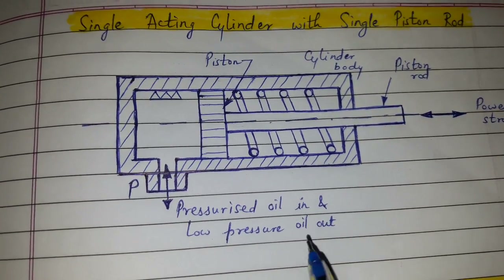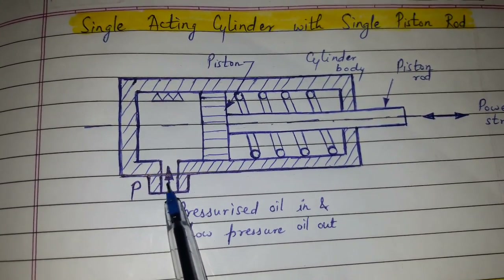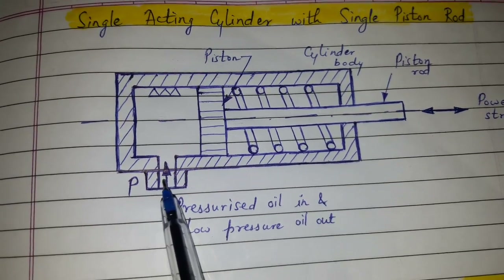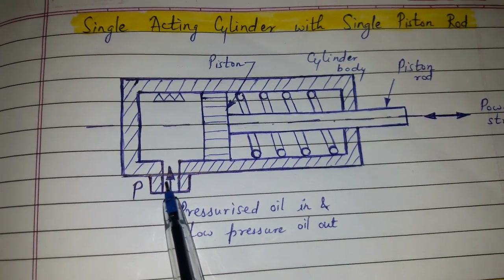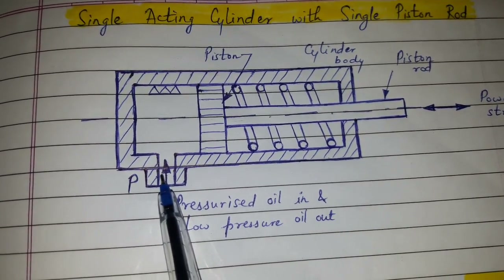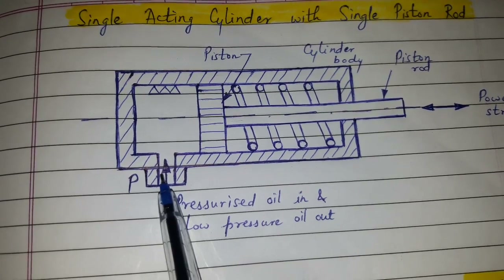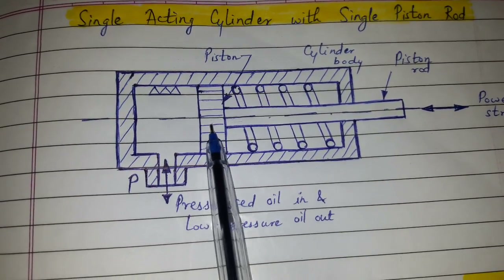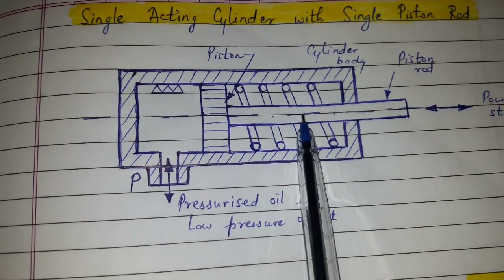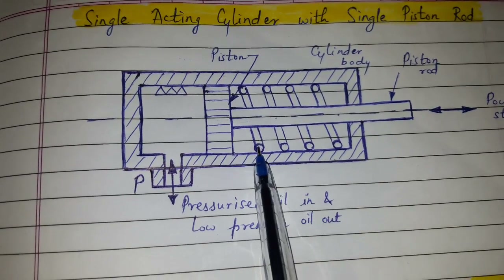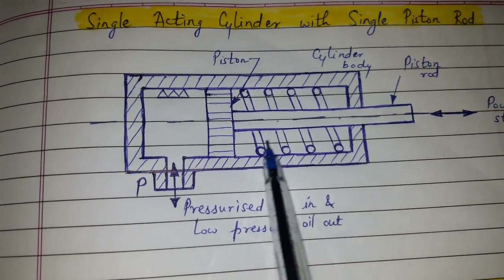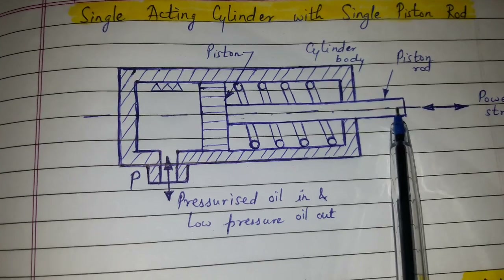Now the working. Pressurized oil enters into the cylinder through port P. The pressure force F equal to P into A will push the piston towards the right side, thereby compressing the spring. This is the power stroke.